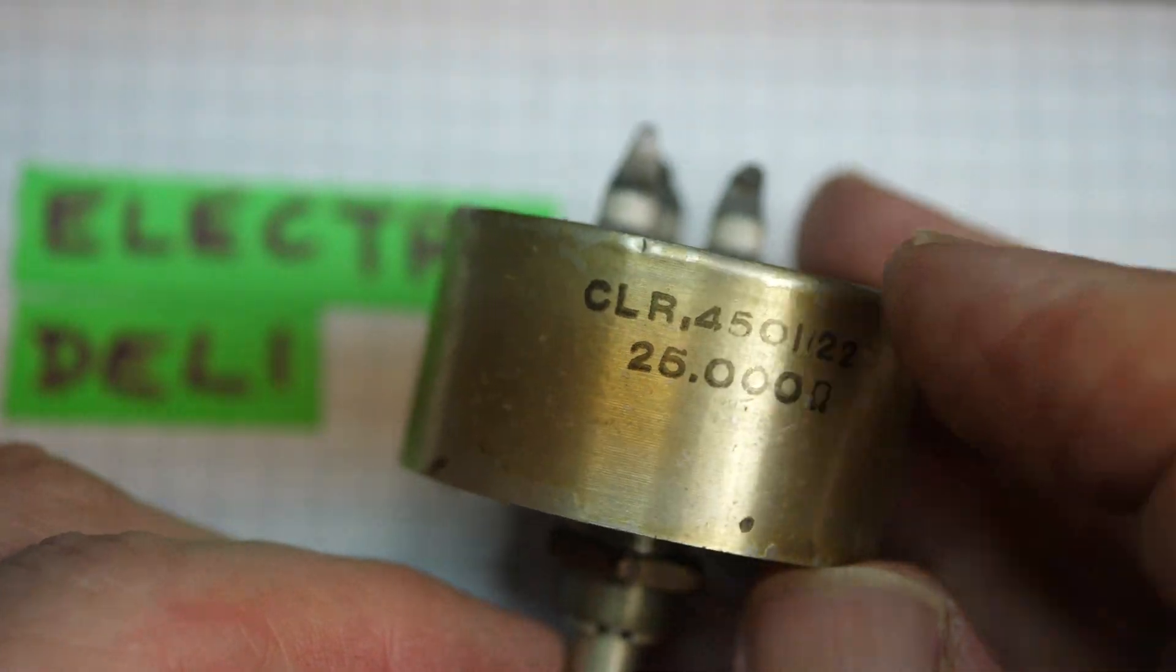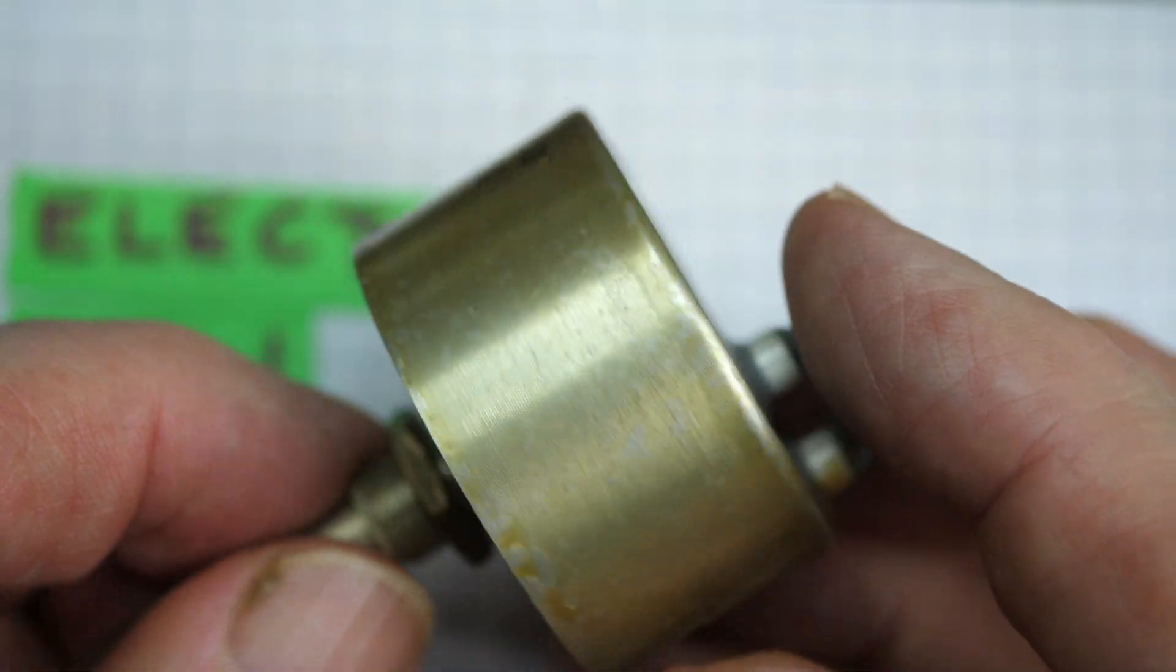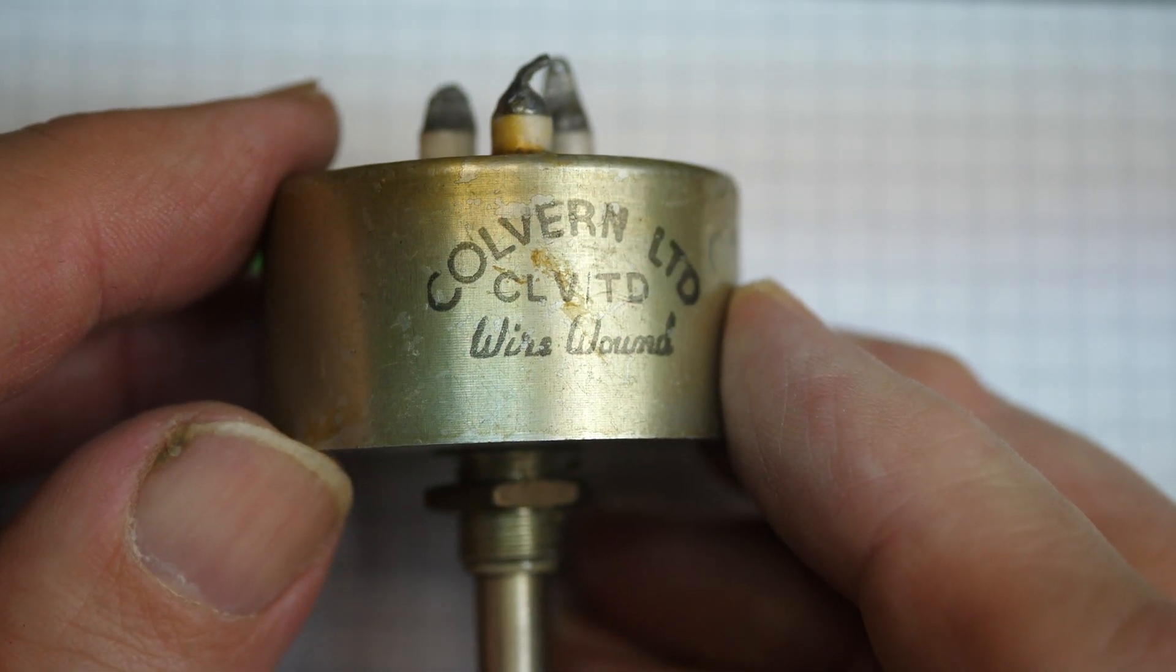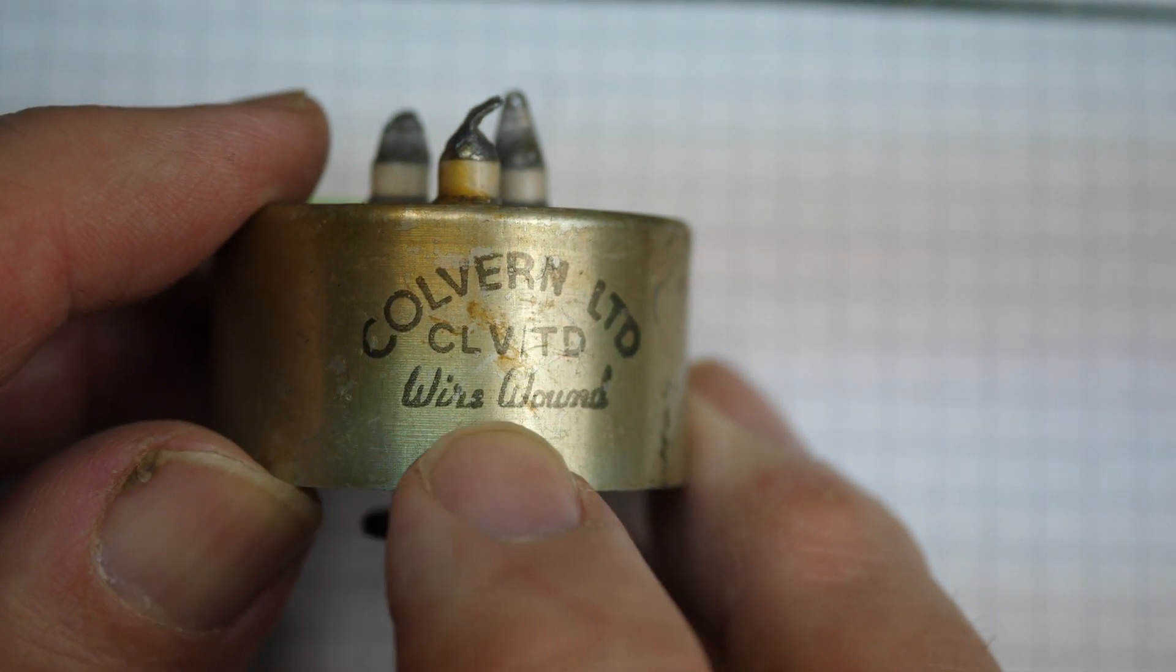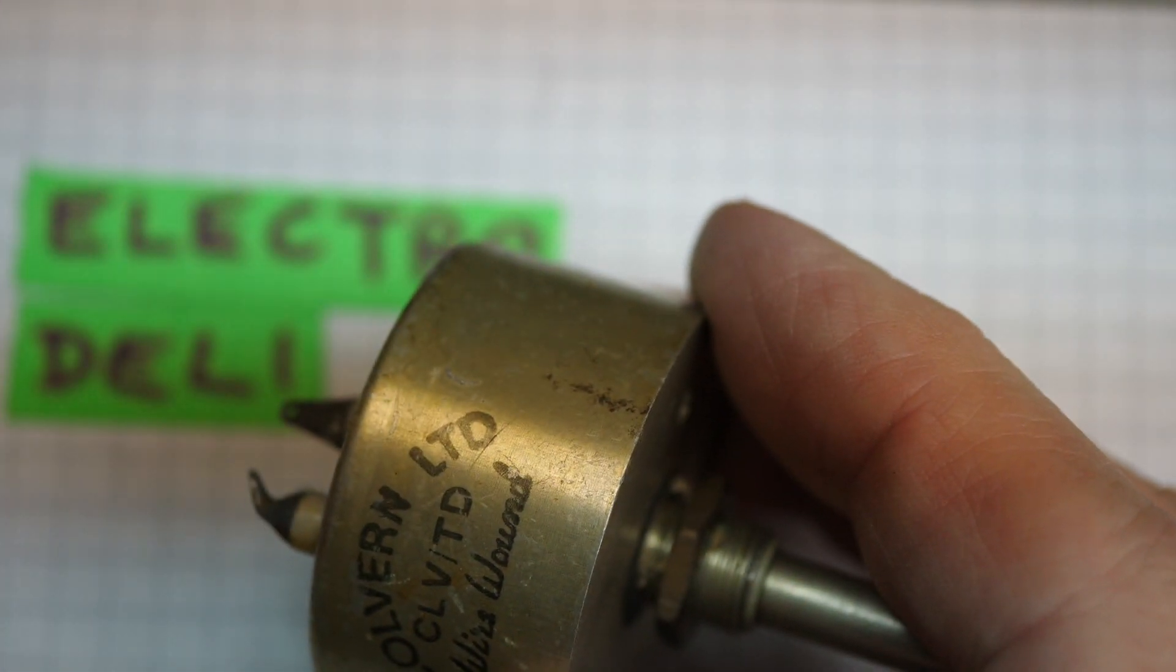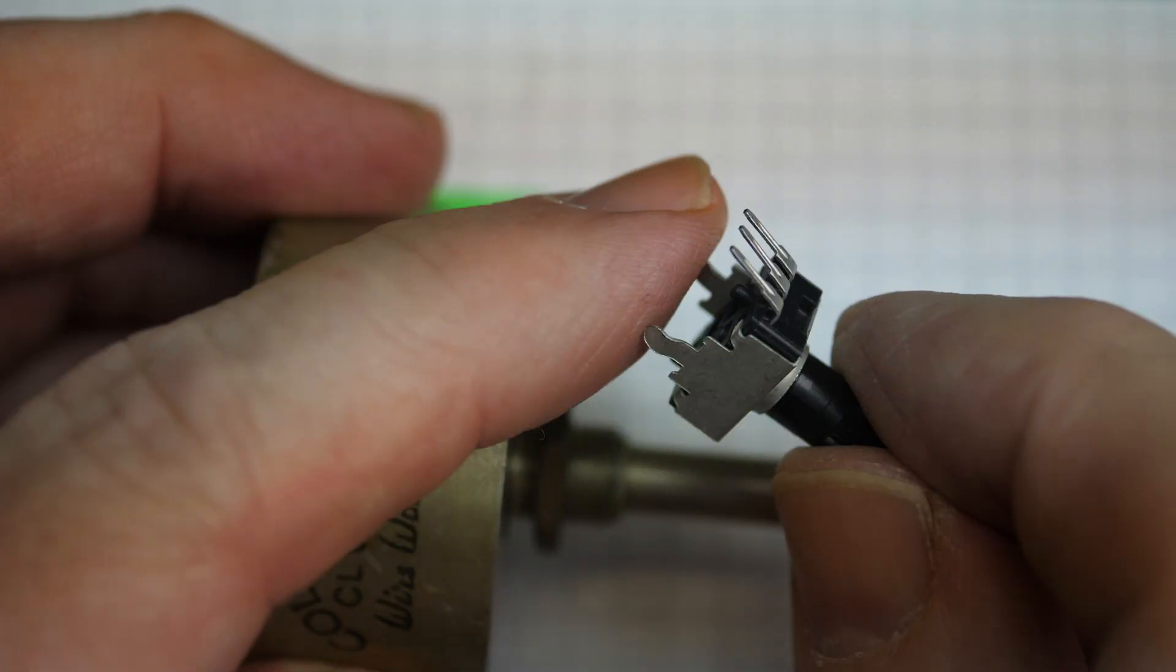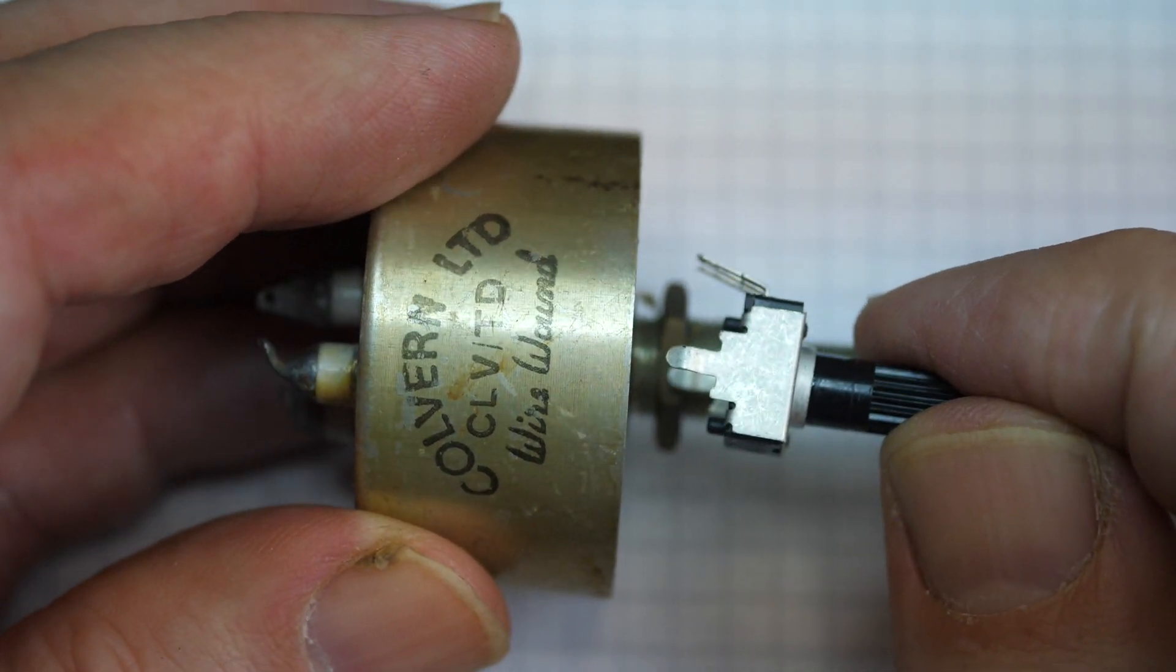But that one, 25k, another part number on there. Unfortunately, I can't see date codes on these. I reckon these are 1960s. Once again, made by Colvern. Maybe 1970s. It again advertises that it's wire wound, just in case you were wondering. And look at the size of that compared to the one we started off with. If I can find that one. We began with this little thing, which is your standard modern pot. And this Colvern wire wound thing is much bigger.